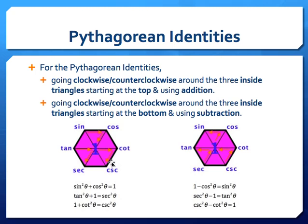If we choose to start at the bottom of one of these inside triangles, we use subtraction. Taking the top inside triangle: one minus cosine squared equals sine squared, or one minus sine squared equals cosine squared. It doesn't matter whether you go clockwise or counterclockwise — if you start at the bottom, you use subtraction. So cosecant squared minus cotangent squared equals one, and secant squared minus one equals tangent squared. All Pythagorean identities can be found using the three inside triangles; start at the top for addition, start at the bottom for subtraction.